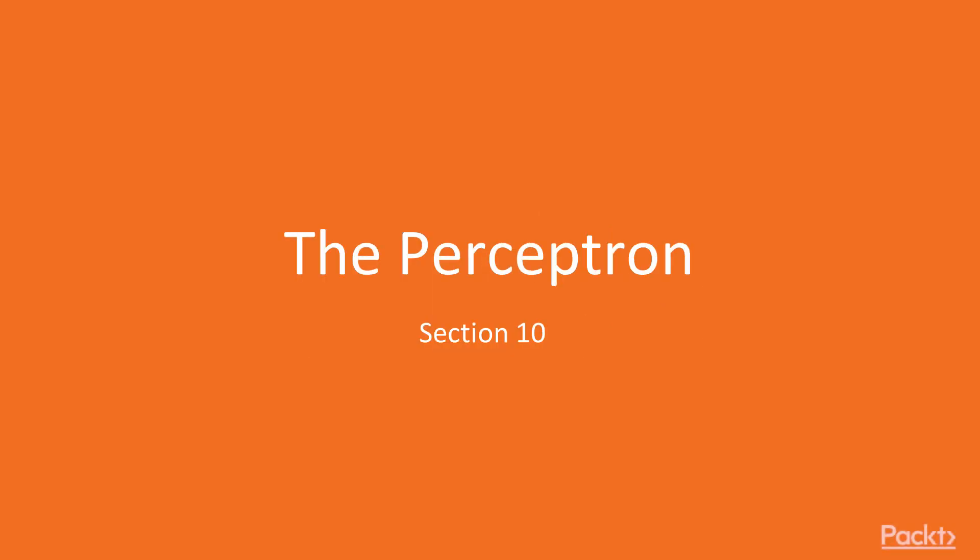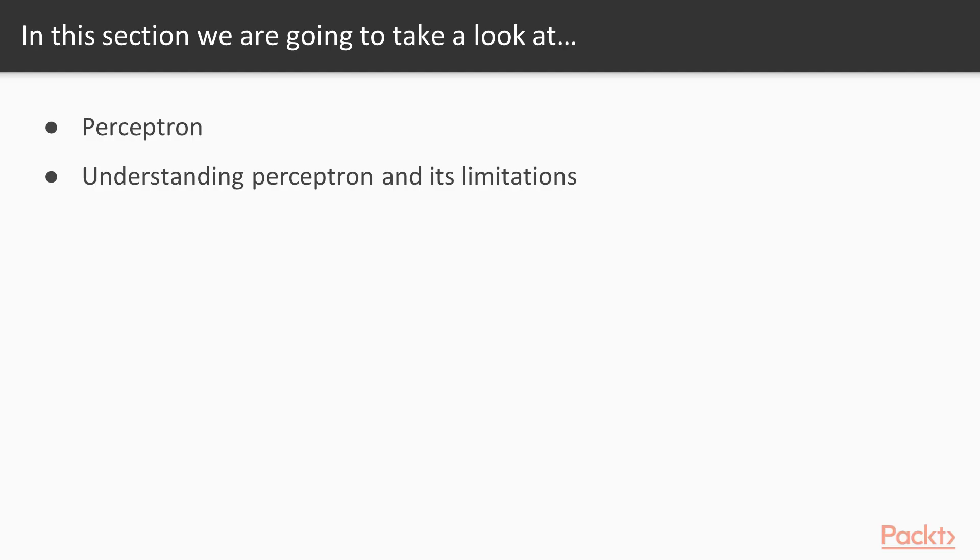Hi, let's start with the next section, the perceptron. In this section we'll introduce another linear model for binary classification tasks, called the perceptron. While the perceptron is seldom used today, understanding it and its limitations is important in order to understand the models that we'll discuss in the following sections.